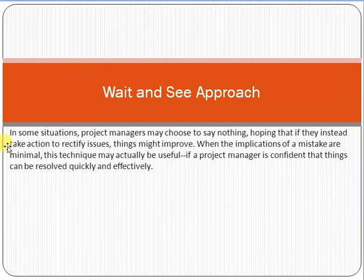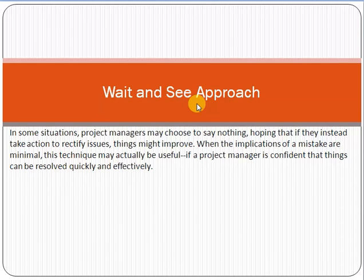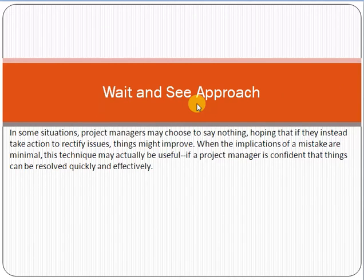Wait and see approach: sometimes it happens that we tell bad news, but if we wait for some time — for example one or two months — maybe things become better after that. So sometimes it is a better approach not to deliver bad news at a very early stage. It is better to wait for some time, and if you think things may get better, just wait and see. Maybe after two or three months, things do get better.